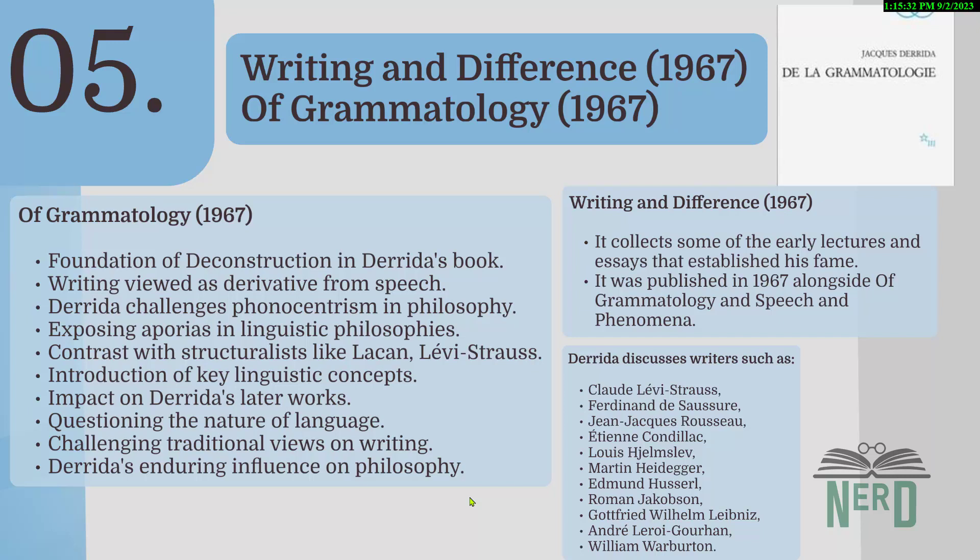Now we'll move to Writing and Difference and Of Grammatology, which are quite important — pay more attention here. These important books are all by Derrida. First up, Writing and Difference, published in 1967, basically collects some of Derrida's early lectures and essays that made him famous — it's like a greatest hits album of his thought. Of Grammatology, also from 1967, is another heavyweight and super crucial for deconstruction. Remember that deconstruction theory came from Of Grammatology, which is about analyzing how language and writing work.